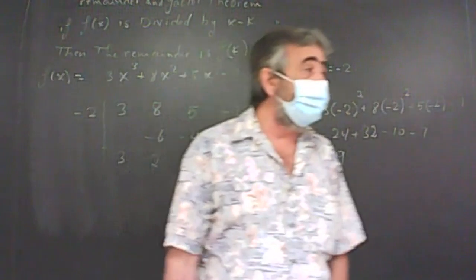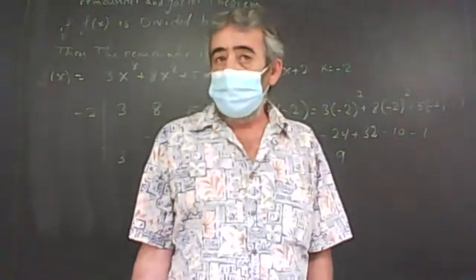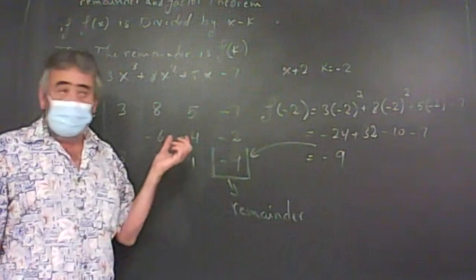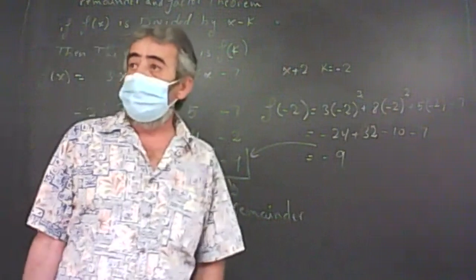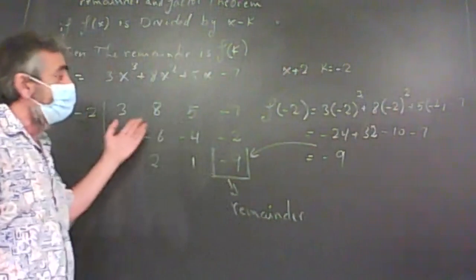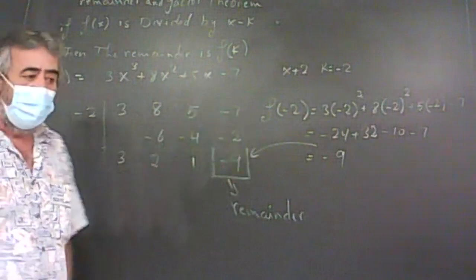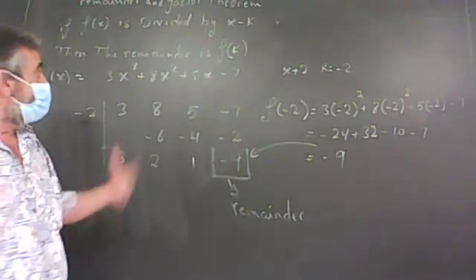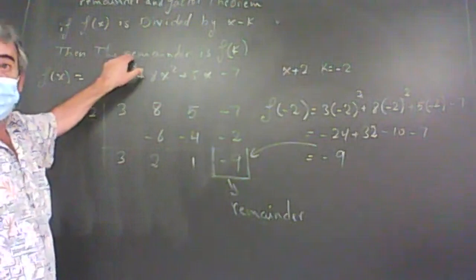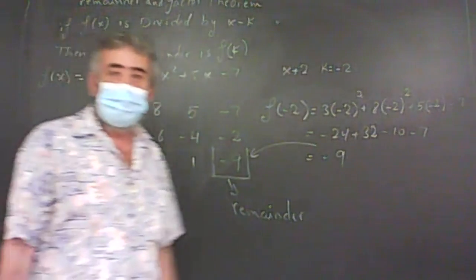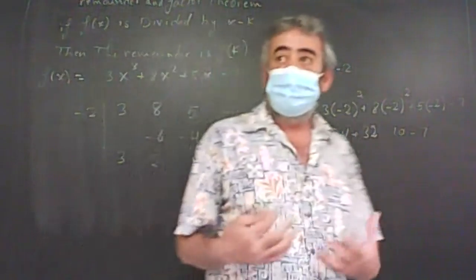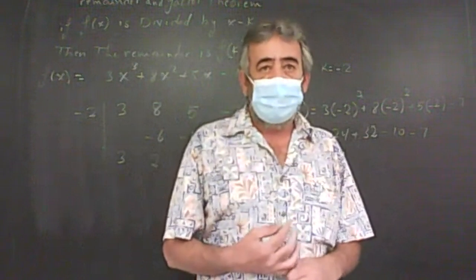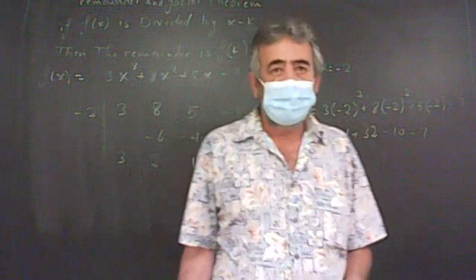So we have two ways of evaluating the function at a point like negative 2: one way is to use synthetic division and find the remainder, which equals the function value, or to substitute directly. Sometimes synthetic division is a whole lot easier — especially when the exponent gets to 7, 8, 9 or higher, where substitution requires careful calculator input and it's easy to make mistakes.